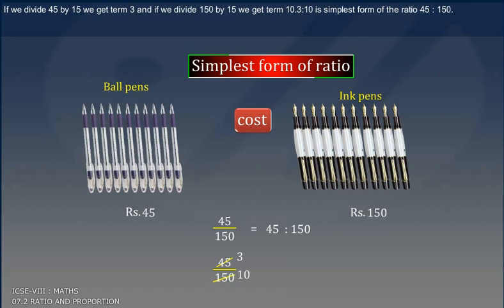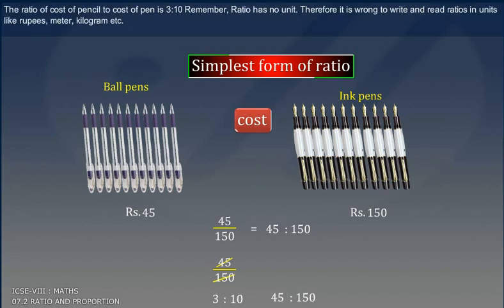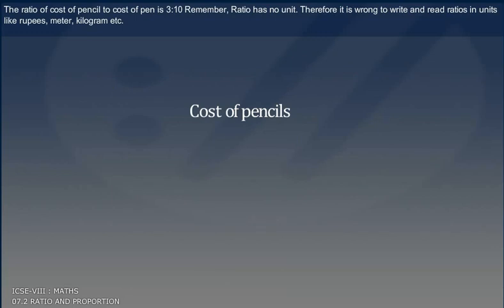So 3 is to 10 is simplest form of the ratio 45 is to 150. The ratio of cost of pencil to cost of pen is 3 is to 10. Remember, ratio has no unit. Therefore, it is wrong to write and read ratios in units like rupees, meter, kilogram, etc.